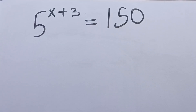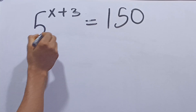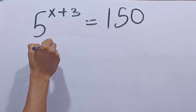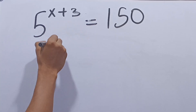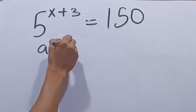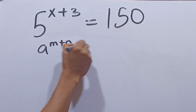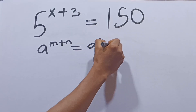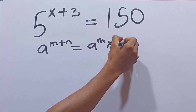5 raised to the power x plus 3 is equal to 150. The first thing we can do here is to say that 5 raised to the power x plus 3 follows the law: a raised to the power m plus n is equal to a raised to the power m times a raised to the power n.